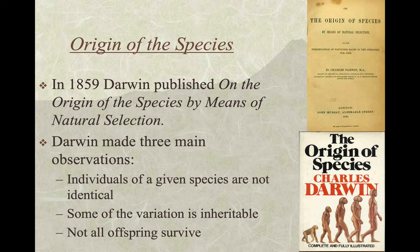Darwin made three main observations in his book. First, individuals of a given species are not identical. If we see two male cardinals outside, there will be a difference between the two. Humans certainly don't all look alike and don't act alike. Culture changes the way we interpret the world. So individuals of a given species are not identical — that's obvious.